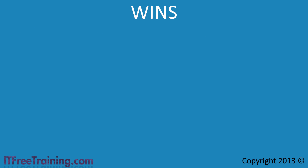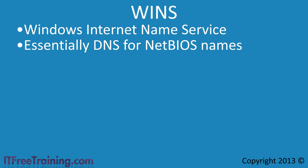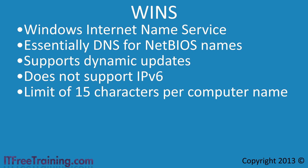Before Microsoft started using DNS as their primary name resolution, they used a system called WINS — Windows Internet Name Service — which is essentially DNS for NetBIOS names. Rather than using the host name used for DNS, it uses NetBIOS names. It supports dynamic updates but does not support IPv6. NetBIOS names are limited to 16 characters; however, Windows uses the last character to identify the type of service the computer is supplying, such as whether it is a domain controller. For this reason, a NetBIOS name in Windows is limited to 15 characters. Since it uses NetBIOS names, the namespace is flat, making it easy for users to find computers on the network.